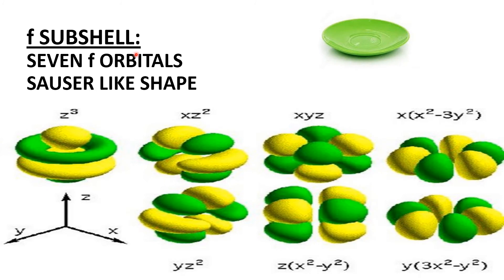F sub-shell has a saucer-like or plate shape and contains seven F orbitals. Each F orbital contains two electrons, so the seven F orbitals hold a maximum of fourteen electrons.